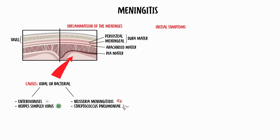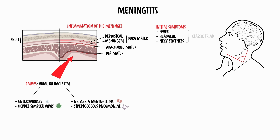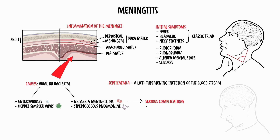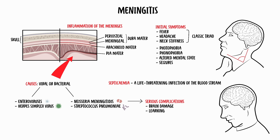Initial symptoms of viral and bacterial meningitis are similar. The classic triad includes fever, headache, and neck stiffness. Photophobia — discomfort with bright lights — and phonophobia — discomfort with loud noises — as well as altered mental state and seizures can also occur. However, bacterial meningitis is often more severe as it can more commonly result in septicemia, a life-threatening infection of the bloodstream. Serious complications of bacterial meningitis include brain damage, learning disabilities, or hearing loss, especially in children.